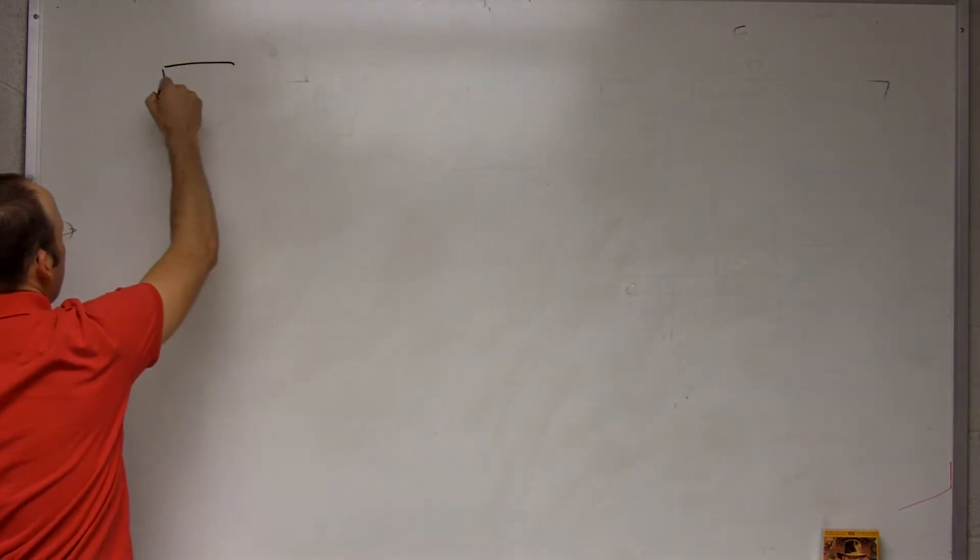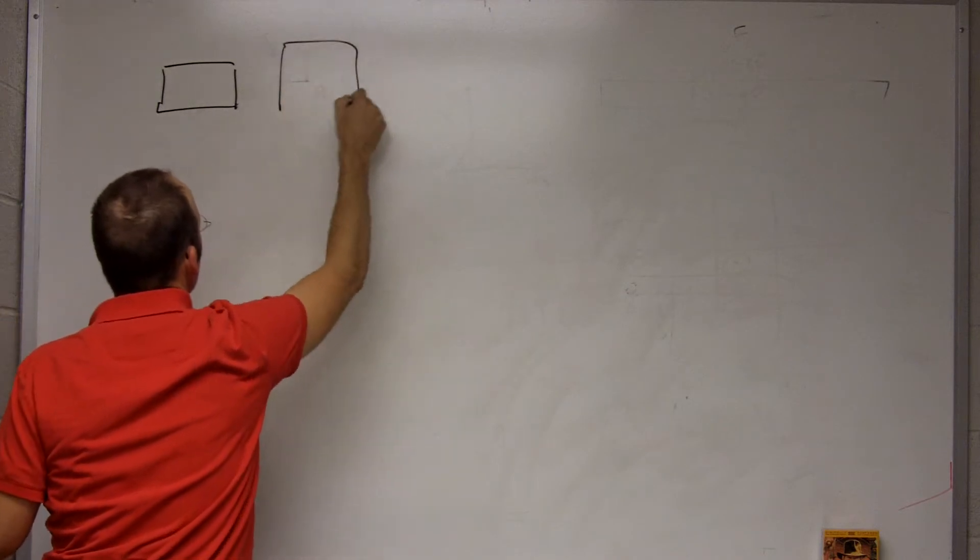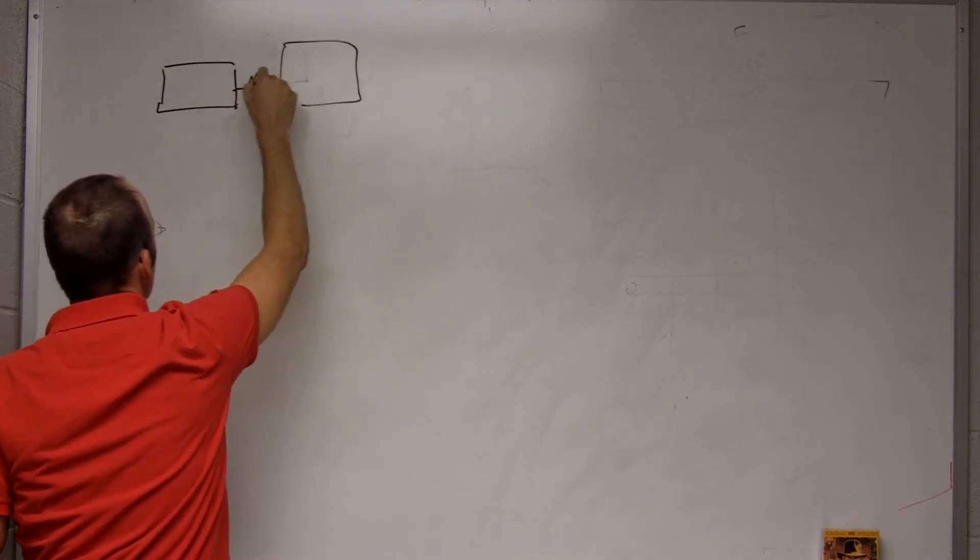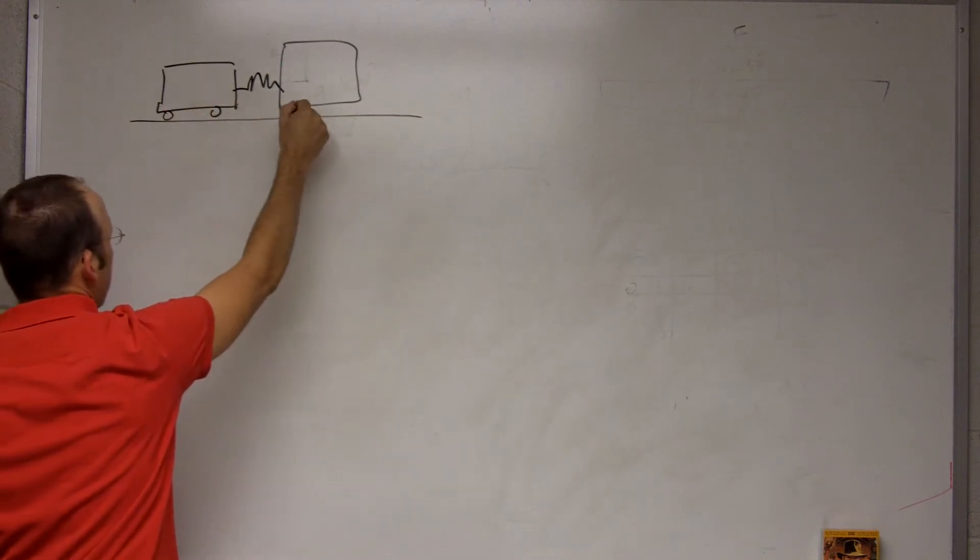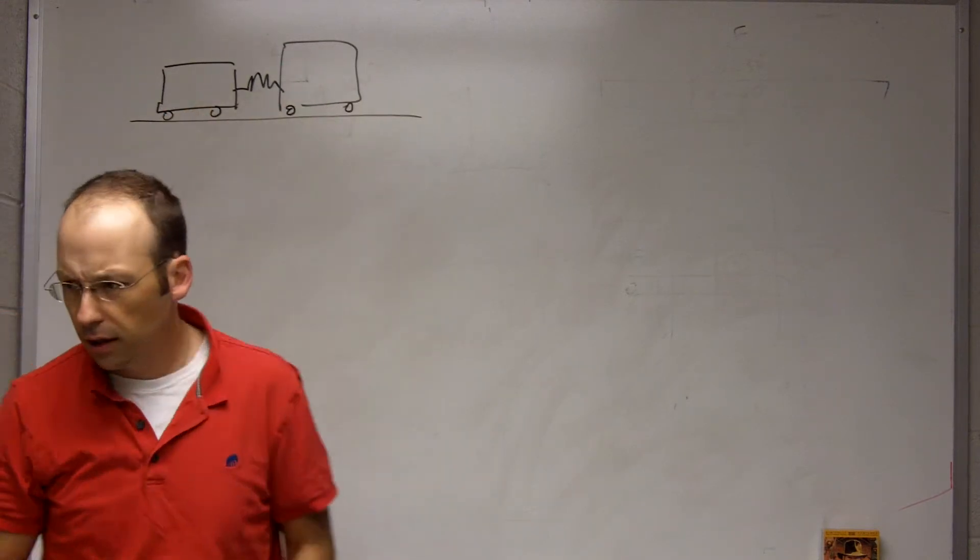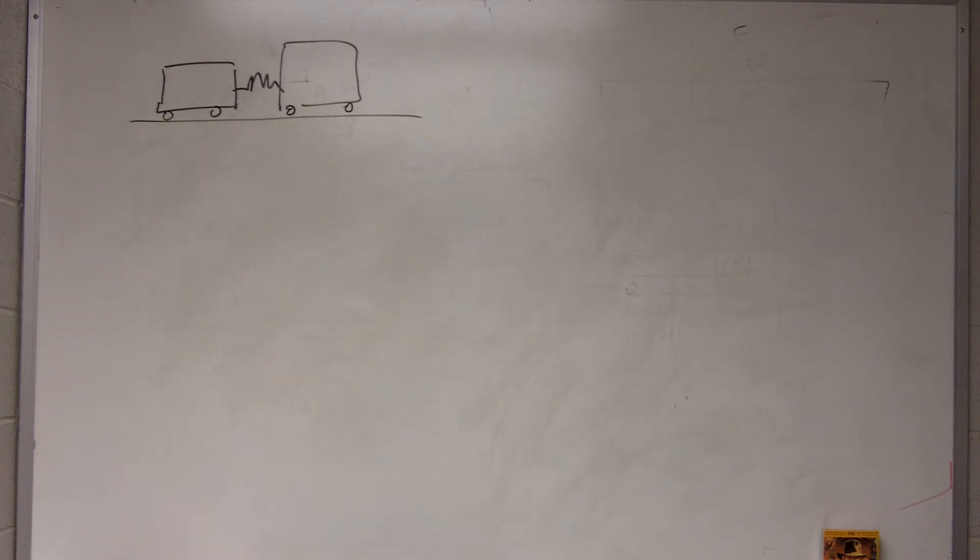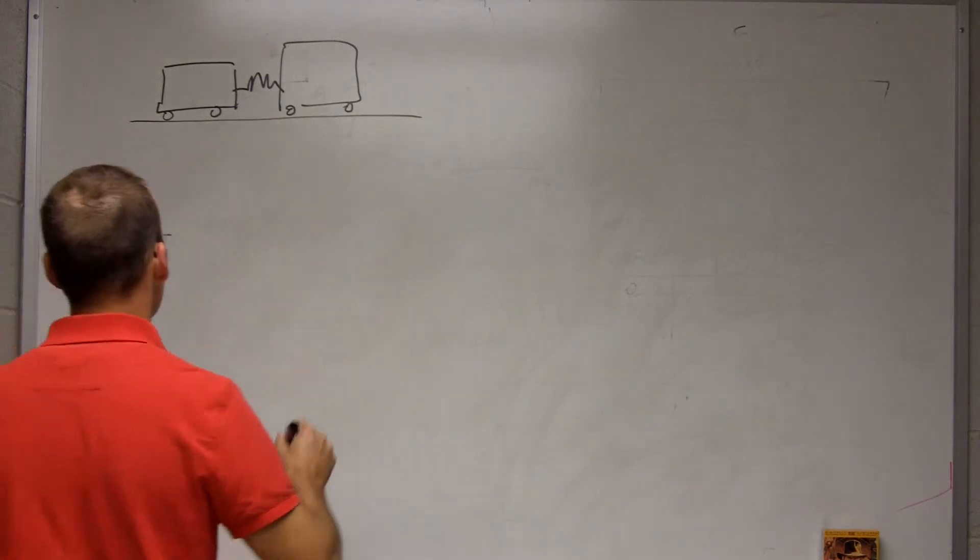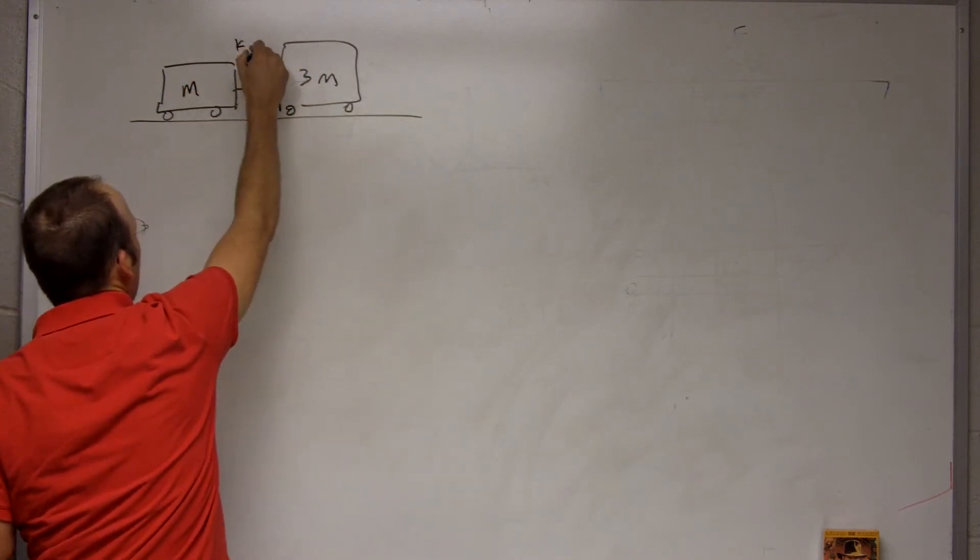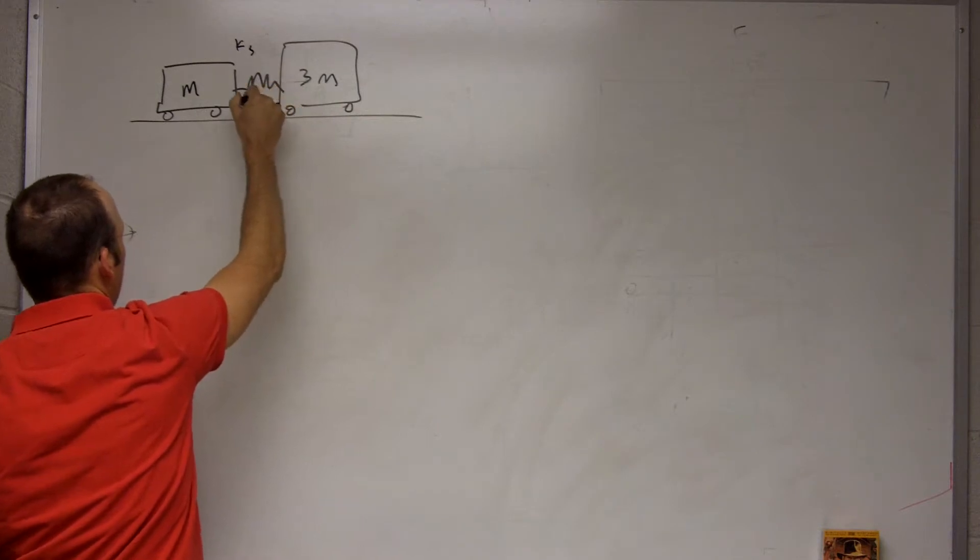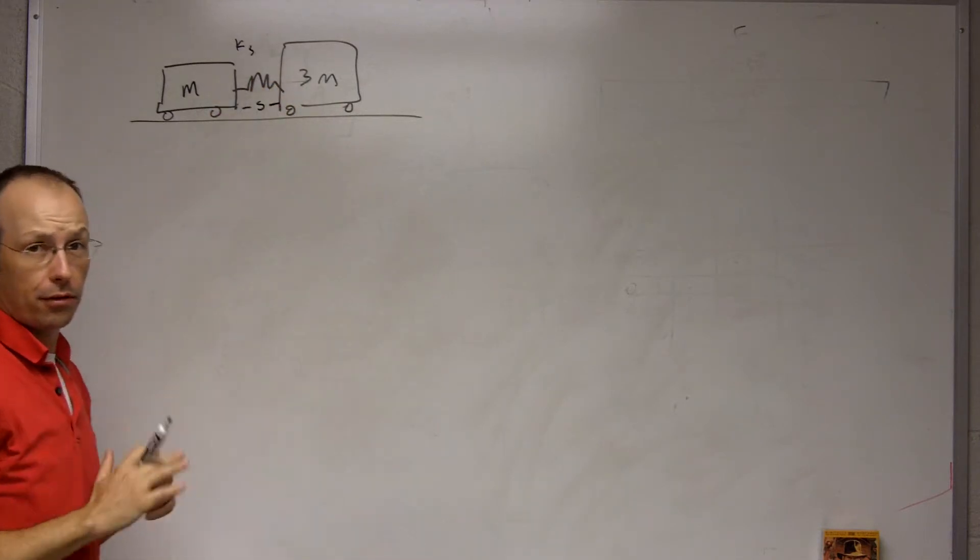Here's the problem. I have two cars on a frictionless plane connected by a spring with spring constant K and compressive distance S. This is a mass M, and this is 3M. This is how much the spring is compressed.